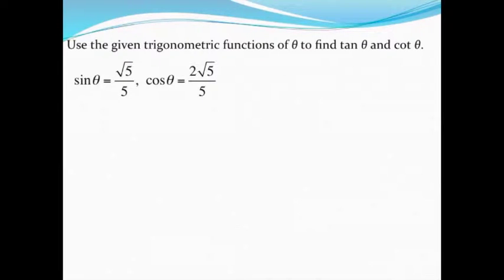In this example, we're given two trigonometric functions: sine of theta and cosine of theta, and we're asked to find the tangent and cotangent of theta. At first glance, it seems like a difficult question, but let's draw a triangle to help figure out what's going on in this problem.